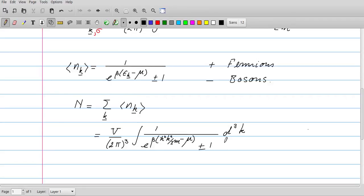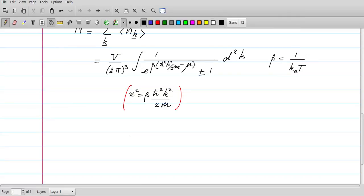We get this integral which tells us how many particles we can find in a volume v and at a temperature T. The temperature enters through this parameter β, which as usual is defined as 1 over kBT.